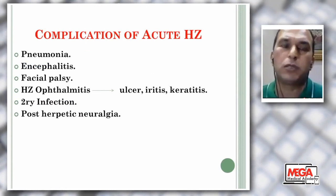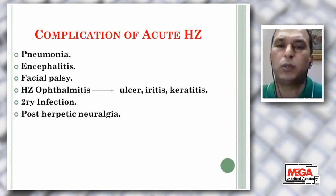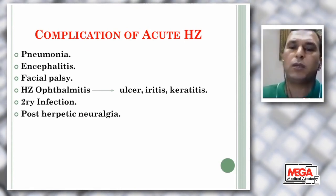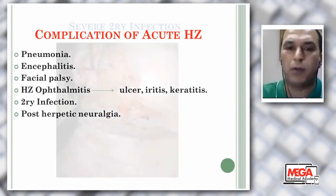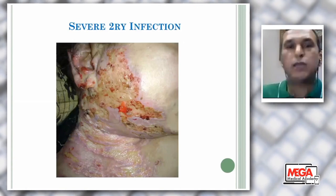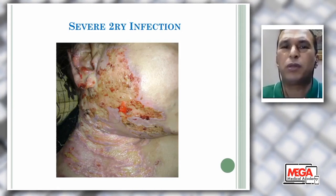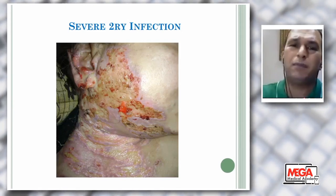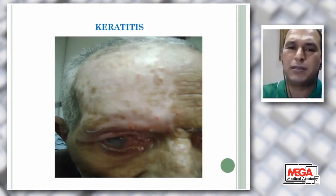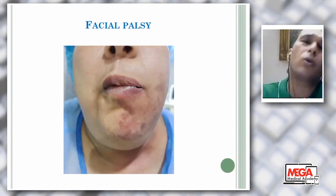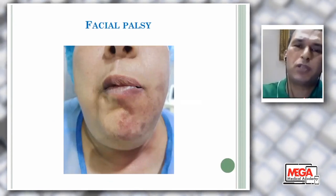Complications of acute herpes zoster include pneumonia, encephalitis, facial palsy, herpes zoster ophthalmicus including ulcer, iritis and keratitis, secondary infection, and post-herpetic neuralgia — the most common complication. This is a case of lymphoma suffering from secondary infection — she suffered from acute herpes zoster, secondary infection, septicemia, and died. This is keratitis — it is a shame in the 21st century to find a patient like this. And this is facial palsy associated with Ramsay Hunt syndrome or facial herpes zoster.